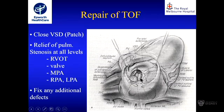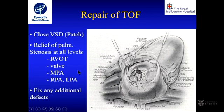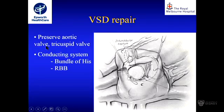Looking through the right atrium, with the tricuspid valve in a dotted line, here's the VSD with the aortic valve right behind it. The things to look out for, apart from the aortic valve and tricuspid valve, is the conducting system running on the inferior margin of the VSD. To fix this, you've got to patch that VSD and relieve the pulmonary stenosis at all levels, fix any additional defects, preserve both valves, and watch out for the conducting system — in particular the bundle of His and the right bundle.